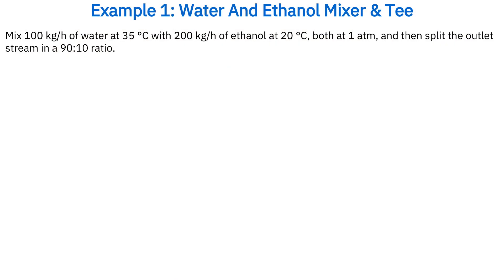First, let's mix 100 kg per hour of water at 35 degrees Celsius with 200 kg per hour of ethanol at 20 degrees Celsius, both at 1 atmospheric pressure, and then split the outlet stream in a 90/10 ratio. Let's walk through the solution step by step.